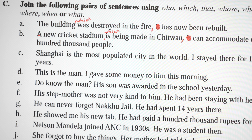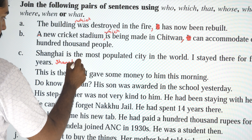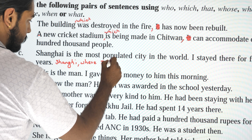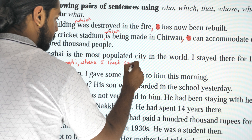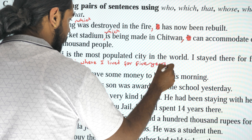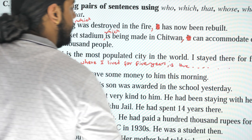'Shanghai is the most populated city in the world. I stayed there for five years.' Combined: 'Shanghai, where I lived for five years, is the most populated city in the world.'